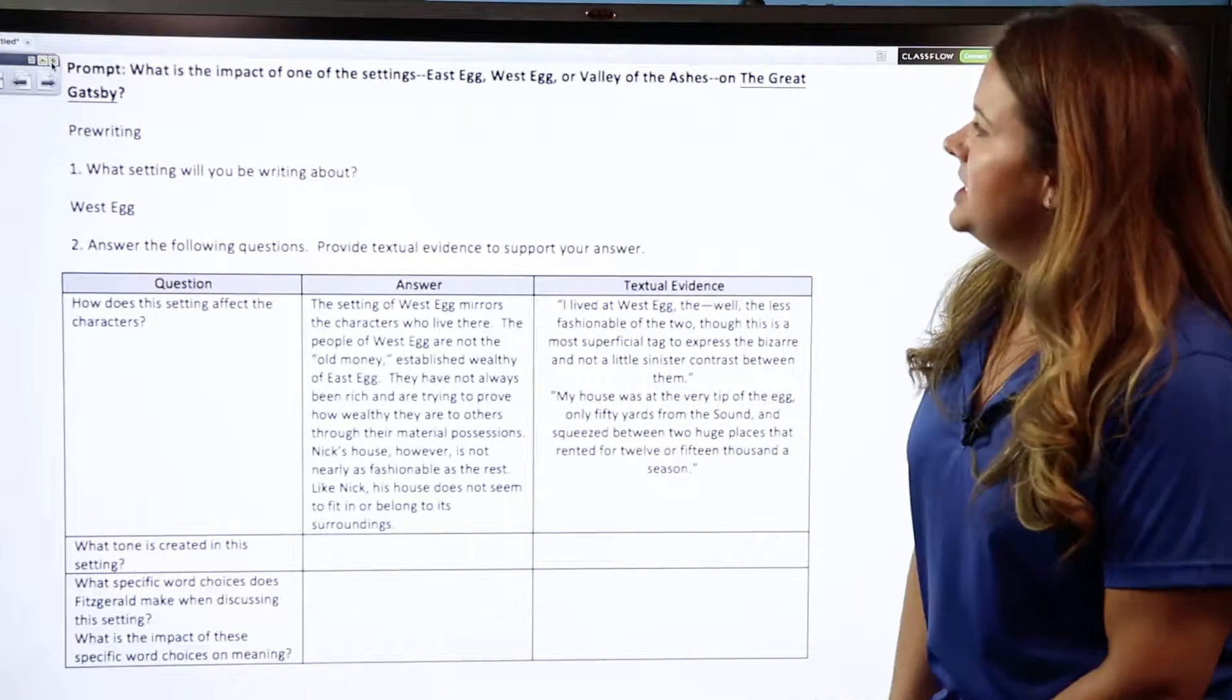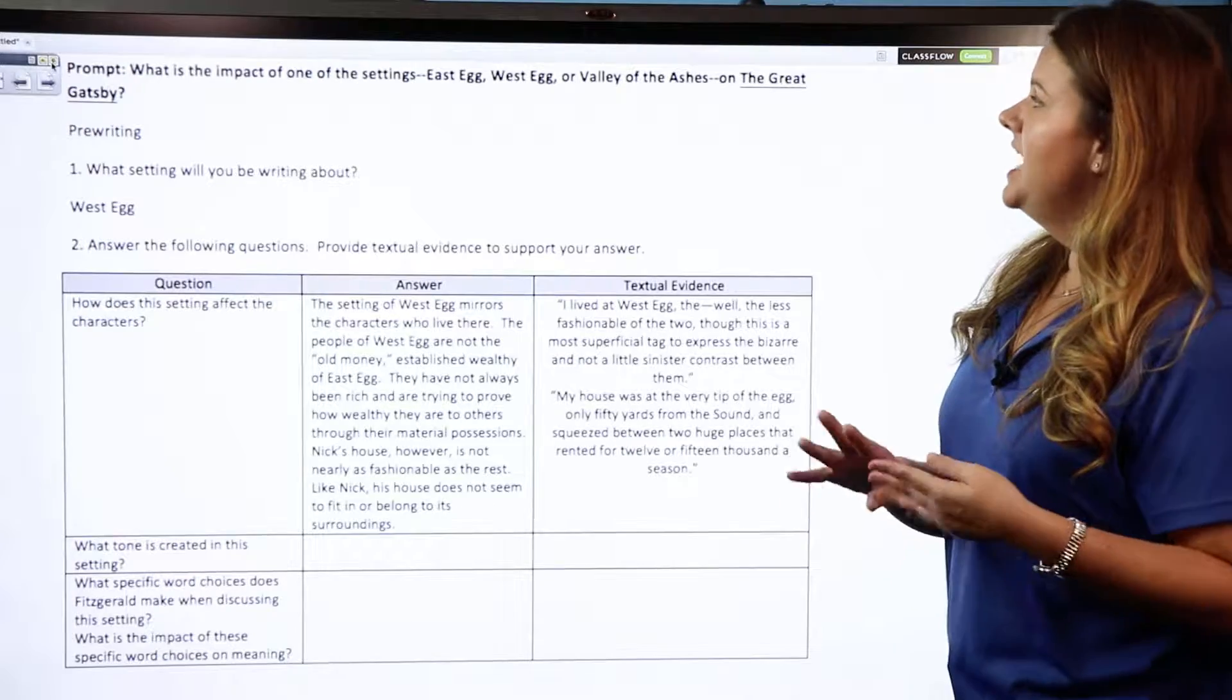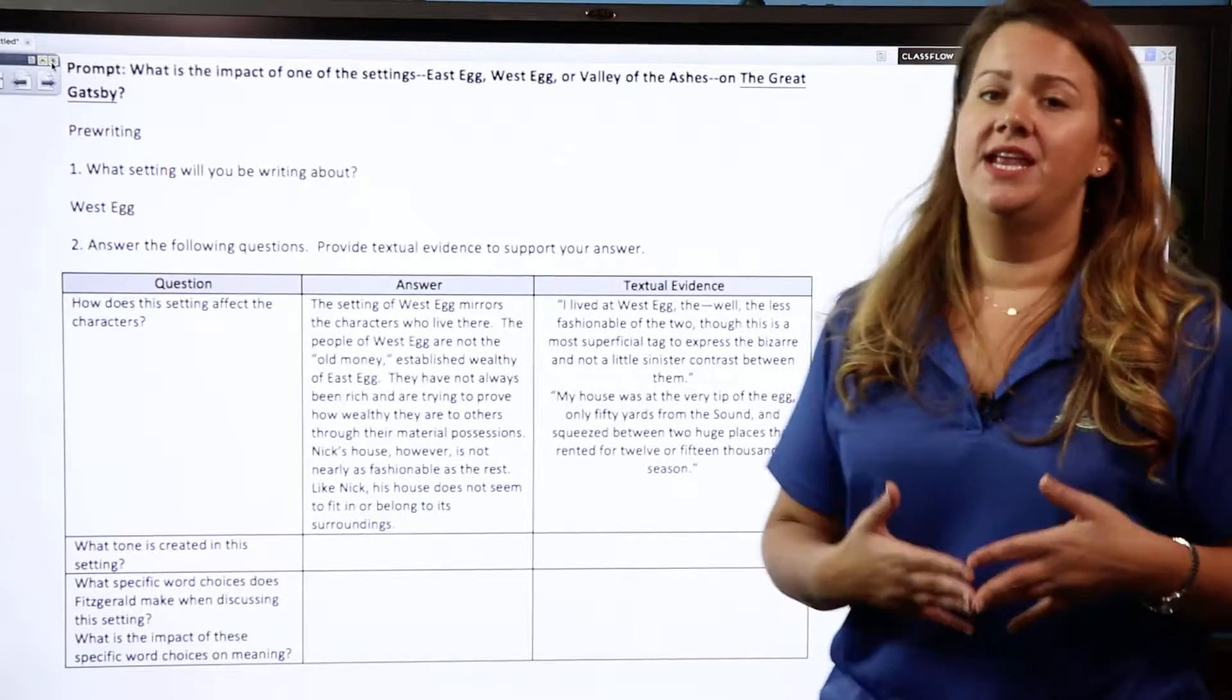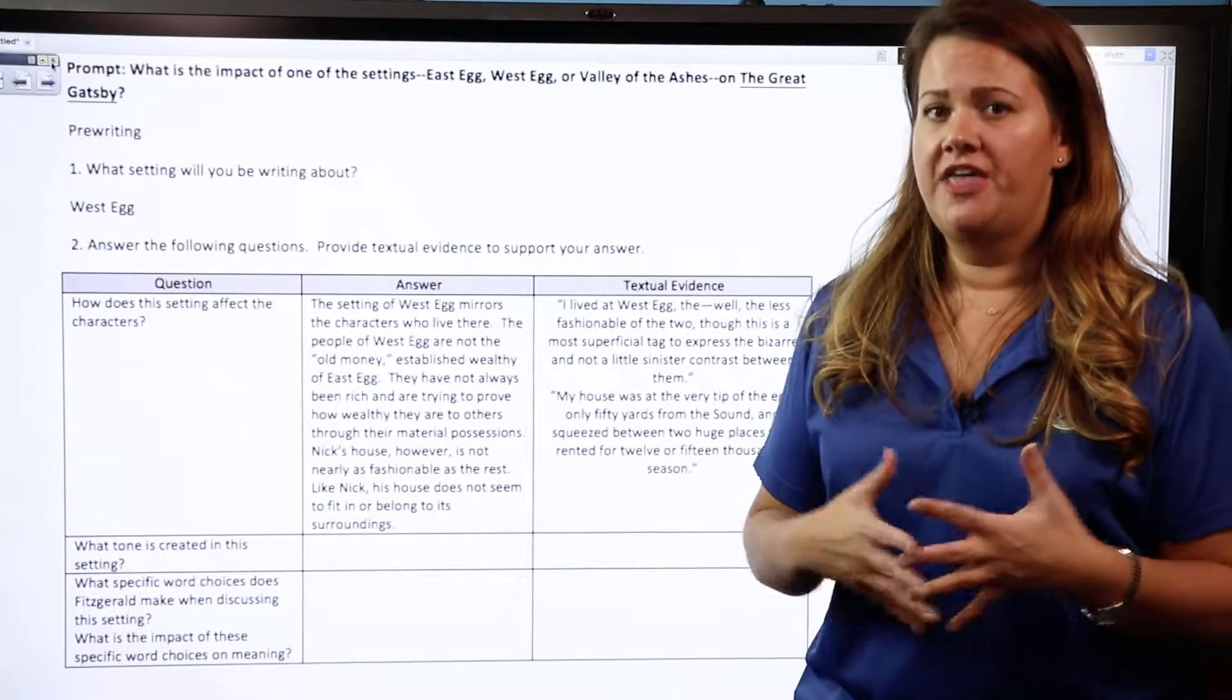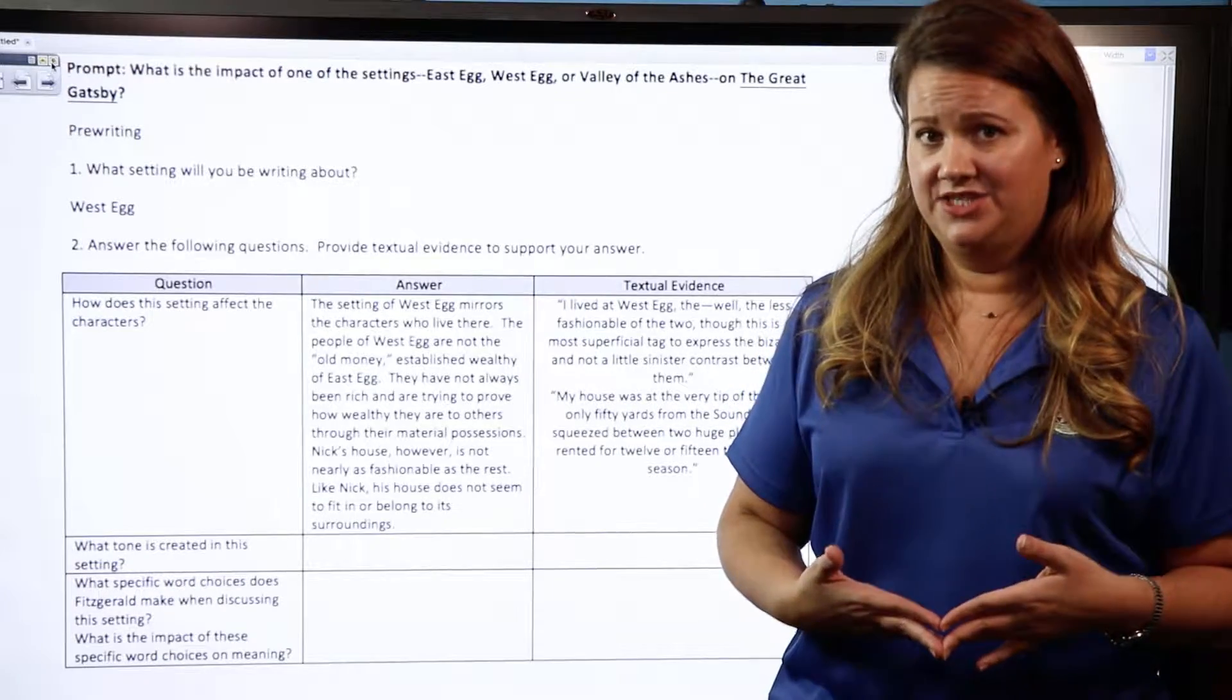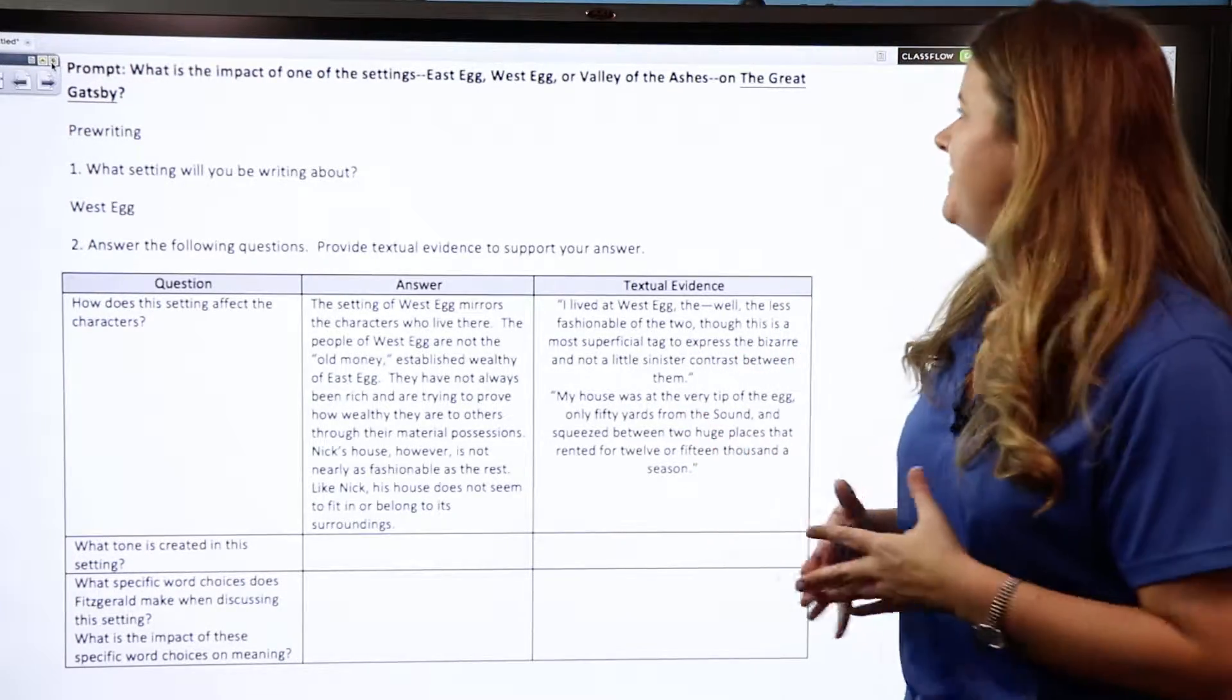Up top we have the prompt here, and it says: What is the impact of one of the settings—East Egg, West Egg, or the Valley of Ashes—on The Great Gatsby? So that is your big question that you have to answer in your literary analysis.